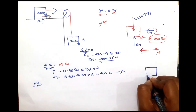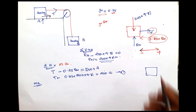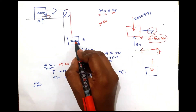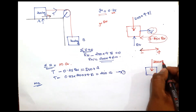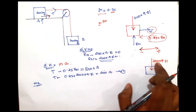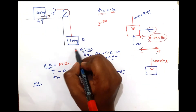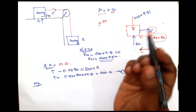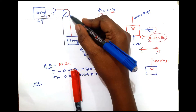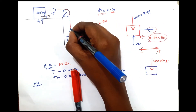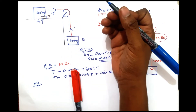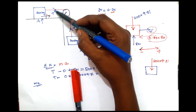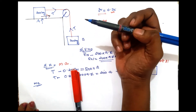Now for the second block, the 300 kg hanging mass. Its weight is 300 into 9.81 Newtons acting downward. There is no contact surface, so no reaction and no friction. The external force is the string, which exerts a tensile force T acting upward. The pulley is smooth, so the tension T is the same throughout the string.